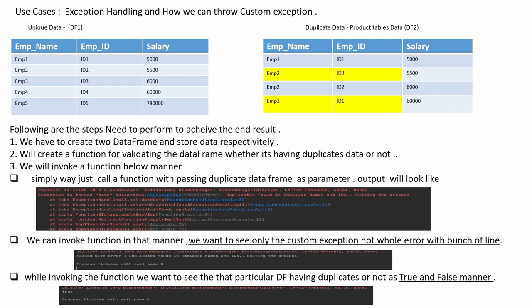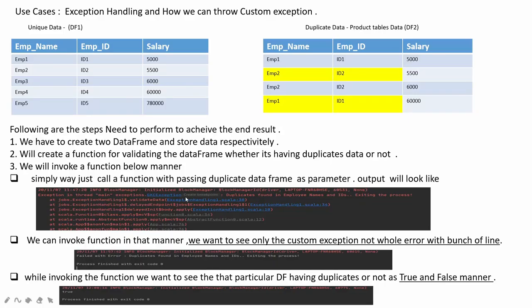First, using a simple way where we pass a DataFrame with duplicate data — the output will look like this snippet, showing a custom message: 'duplicate found in employee name and IDs, exiting the process.' Second, if we want to see only the custom exception and not the whole error with a bunch of lines, we can invoke the function that way. Third, we can also see whether the particular DataFrame has duplicates, with the result being true or false.